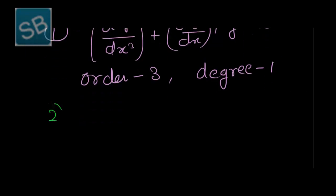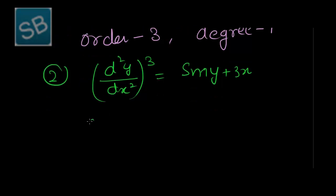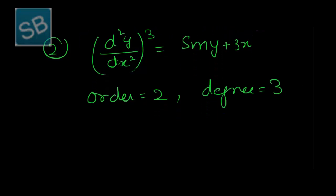The second equation is (d²y/dx²)³ = sin(y) + 3x. Here, the highest order derivative is the second derivative, so order is 2. The degree is 3 because the highest order derivative is raised to the power 3.